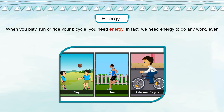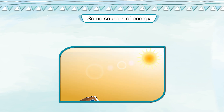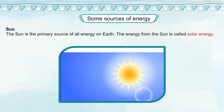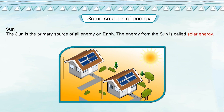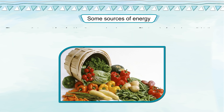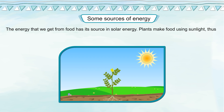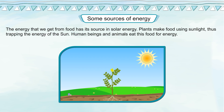When you play, run or ride your bicycle, you need energy. In fact, we need energy to do any work, even to speak and to laugh. Energy can be defined as the ability to do work. The sun is the primary source of all energy on earth. The energy from the sun is called solar energy. We get light and heat from the sun. Sunlight can be used to cook food in a solar cooker or to heat water in a solar heater. The energy that we get from food has its source in solar energy. Plants make food using sunlight, storing the energy of the sun, and human beings and animals eat this food for energy.